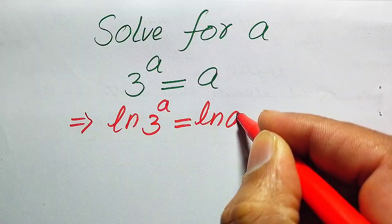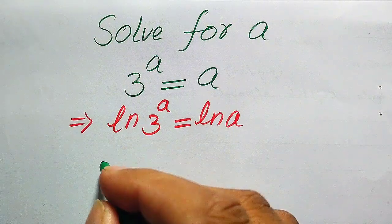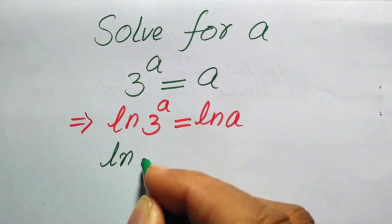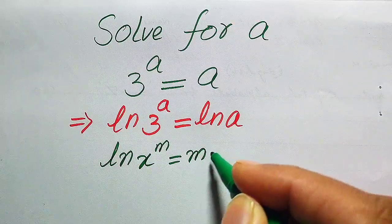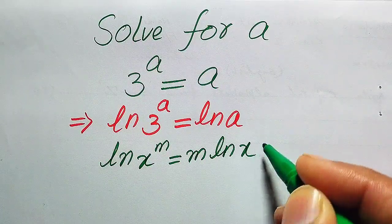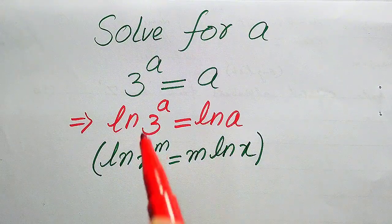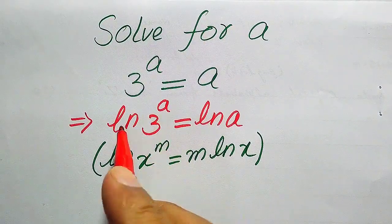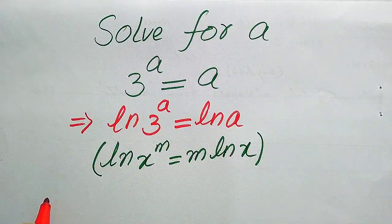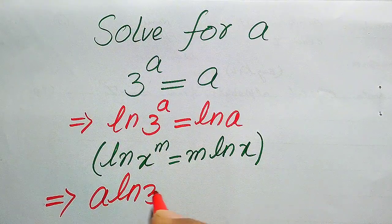In the next step, we use the logarithmic property: log of x to the power of m equals m times log x. According to this rule, we move the exponent of this term to the front of the log. After moving it, it is written as a times log 3 equals log of a.